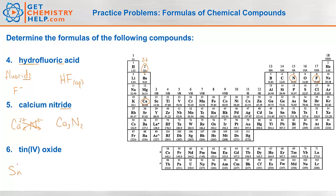Tin(IV) oxide. Sn is tin, and the 4 tells me it's 4-positive. Oxide: '-ide' means non-metal by itself. Oxygen is 2 away from the noble gases, so it's 2-negative. Using the crossover rule gives Sn₂O₄, but remember we have to reduce it to the simplest ratio. Two to four reduces to SnO₂. To balance a 4-positive, we only need 2 of the 2-negatives, so SnO₂ is the correct formula.